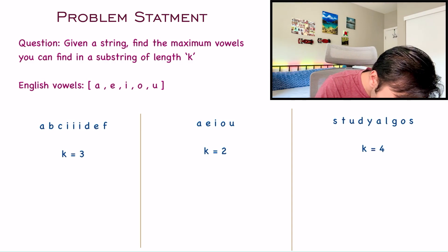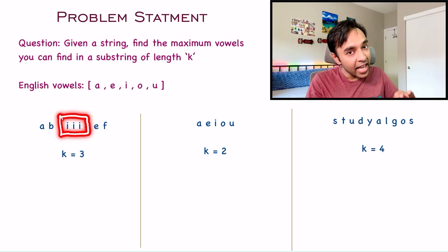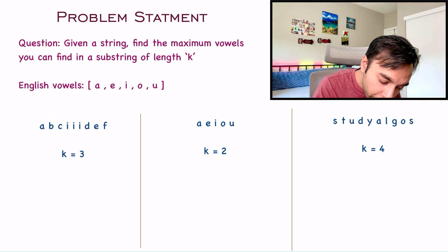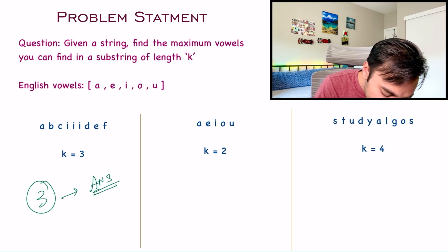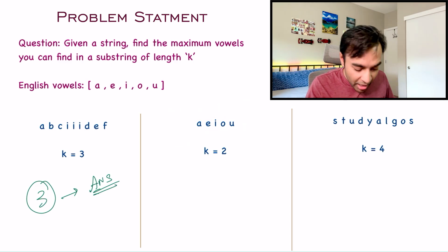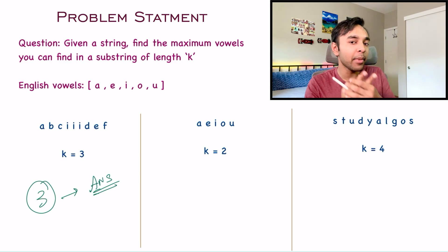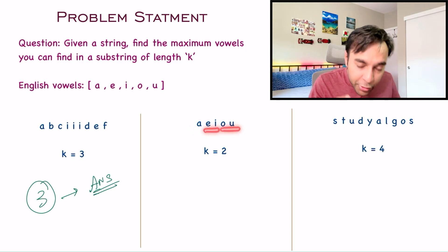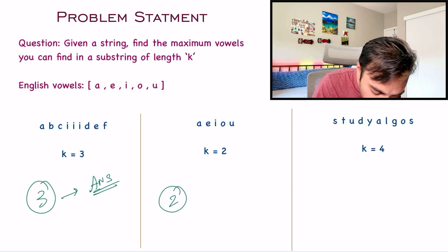So for the first test case, 3 will be your answer. Similarly, when you look at your second test case, all of these characters are vowels, but the value of k is 2. That means you can choose a substring that has a maximum of 2 characters. So no matter whichever substring you pick, you will get a maximum of 2 vowels. So for your second test case, 2 is your answer.